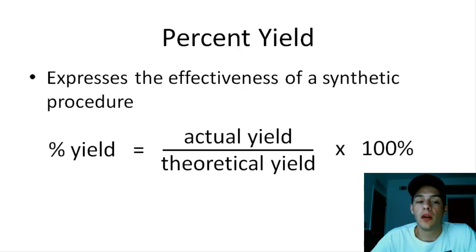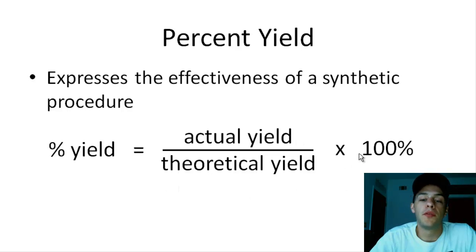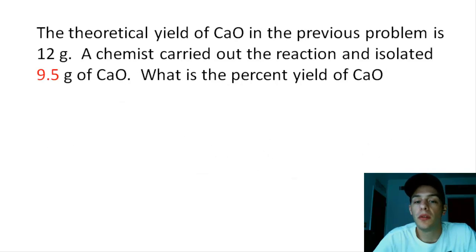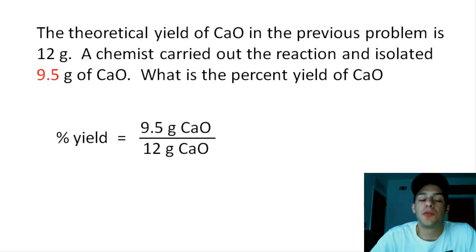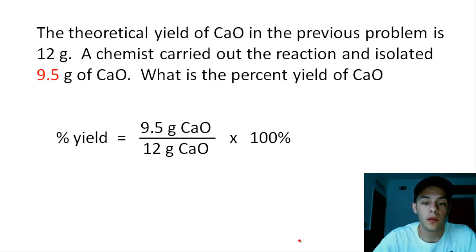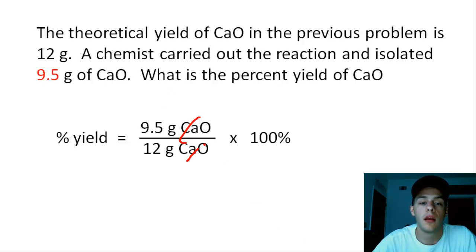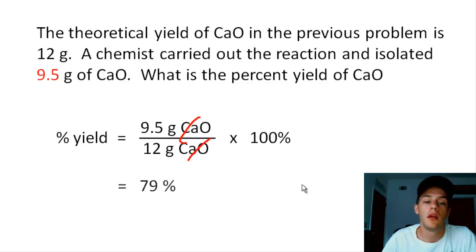The formula for percent yield is the actual yield — obtained from an experiment in a lab — divided by the theoretical yield, multiplied by 100%. In our problem, the theoretical yield of calcium oxide is 12 grams. A chemist carried out the reaction and isolated 9.5 grams of calcium oxide. To get percent yield, we take the actual yield of 9.5 grams divided by the theoretical yield of 12 grams, multiplied by 100%. The grams cancel, giving us a percent yield of 79%.